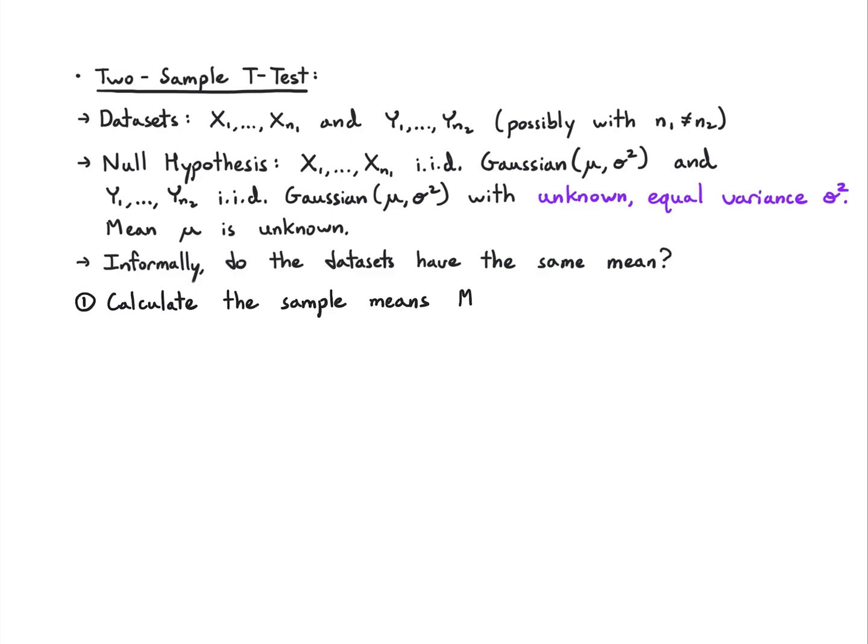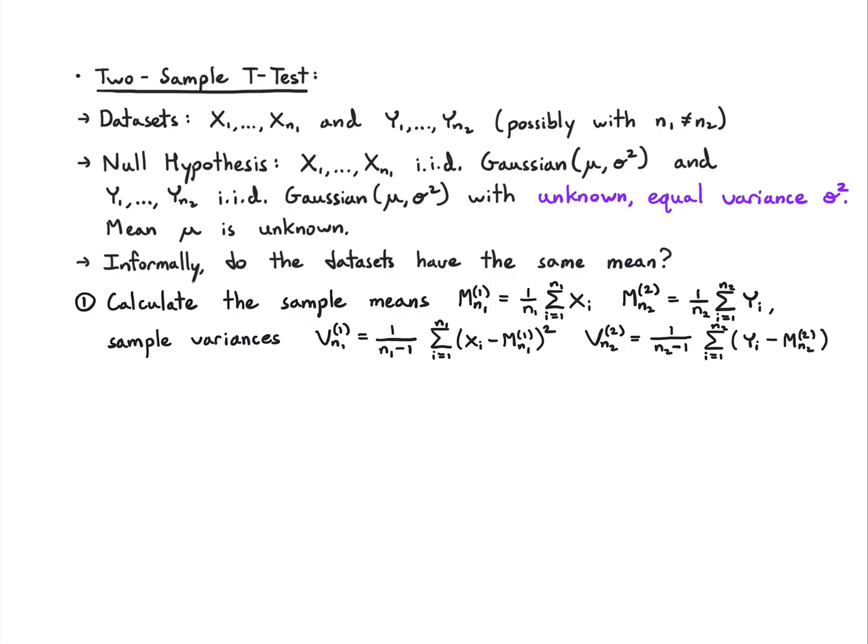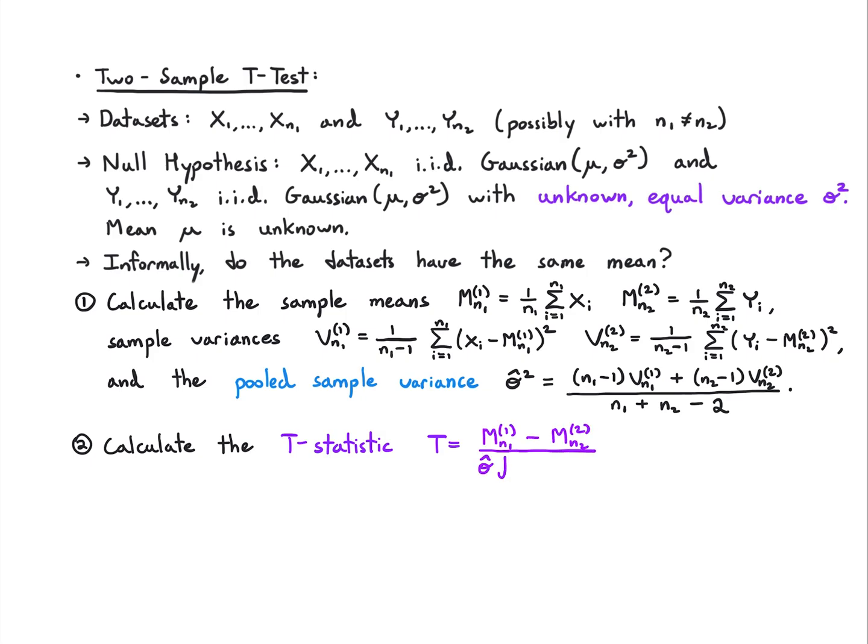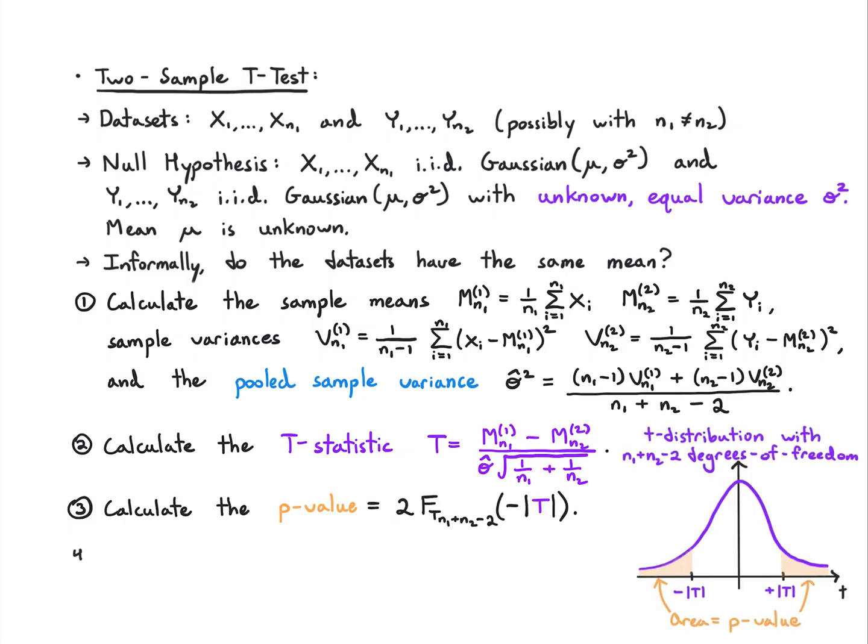What we do is we calculate sample means. Just like before, we average the datasets. Now we don't know the variance, so we're going to calculate the sample variances. We do that for one dataset, we do that for the other dataset. Now because we think the variance is the same, we're going to pool together the sample variances. We're going to take the scaled sample variances divided by n1 plus n2 minus 2. It turns out this gives us a t-statistic if we take their difference, divide by the pooled standard deviation, square root of this factor. We can calculate the p-value, noting that this is the t-distribution with n1 plus n2 minus 2 degrees of freedom.